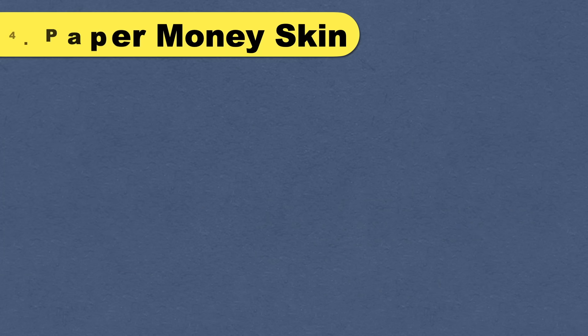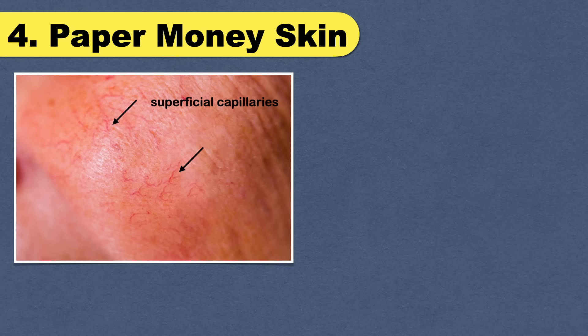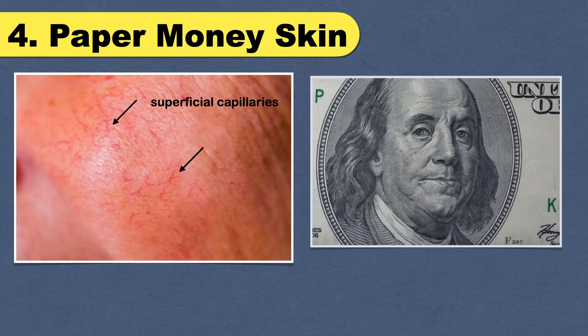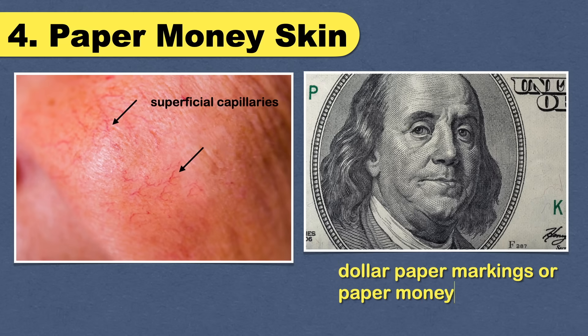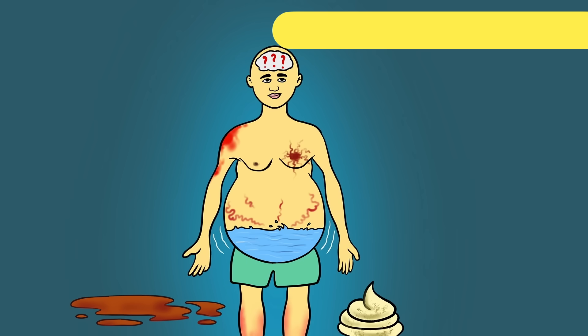The next important skin sign is paper money skin. Patients with cirrhosis have many randomly scattered thin superficial capillaries over the upper trunk in association with spider angiomas. This resembles the silk thread in American dollar bills, and hence the name dollar paper marking or paper money skin.